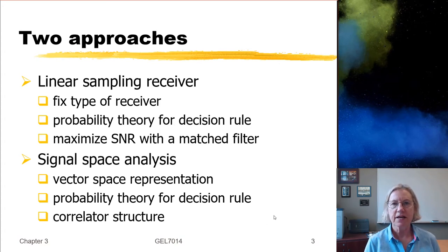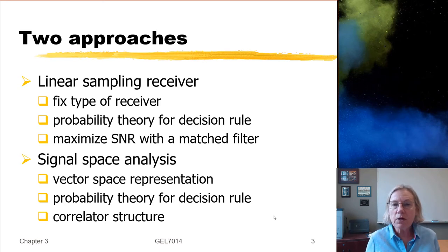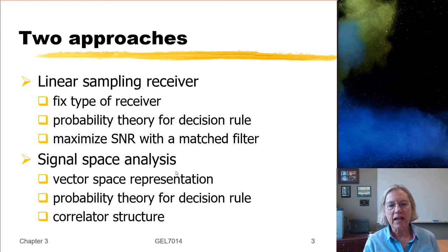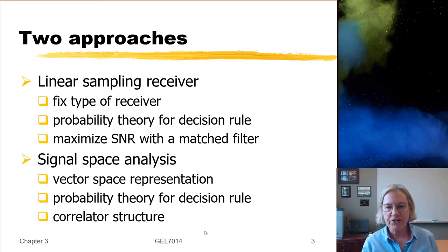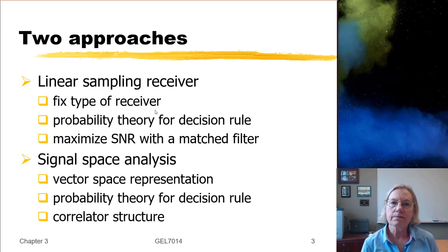Week two, we looked at a signal space analysis. We talked about how to represent the transmission of symbols in a vector space and the presence of noise in that vector space. We went through the same probability theory to come up with a decision rule, and we came up with what looked like a similar but more general rule for any size constellation. What I'd like to show you today is that the analysis in signal space leads to what we call a correlator structure. My goal is to show that the matched filter receiver — the linear sampling receiver — is in essence identical to what we get from the correlator structure in a signal space analysis. When we go back to signal space, we see that it's actually a very general result.